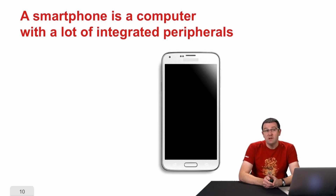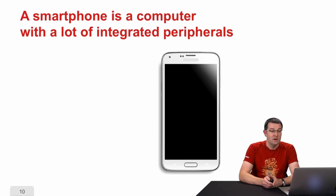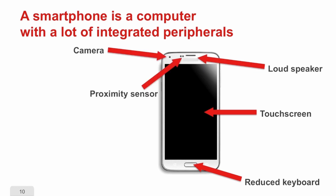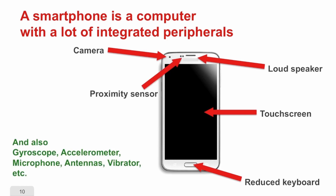Now let's talk about smartphones, which are also computers, but very different from the outside — not only because of their size, but also because instead of having lots of external ports, they have many peripherals integrated inside. Smartphone screens are touch sensitive, replacing the keyboard. There are loudspeakers, a mic, a camera, a proximity sensor to detect whether you're holding the phone to your ear, and many internal components like gyroscopes, accelerometers, and vibrators — lots of sensors allowing it to gather information about its environment and hand it to the processor for calculations.